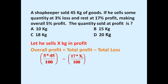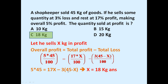The full equation is: (17 × x) / 100 minus (3 × (45 − x)) / 100. Total quantity is 45 kg; x is sold at profit, so 45 minus x is sold at loss. Simplifying: 5 × 45 = 17x − 3(45 − x), which gives x = 18 kg. The shopkeeper sold 18 kg at 17% profit and the remaining 27 kg at 3% loss, resulting in an overall profit of 5%.